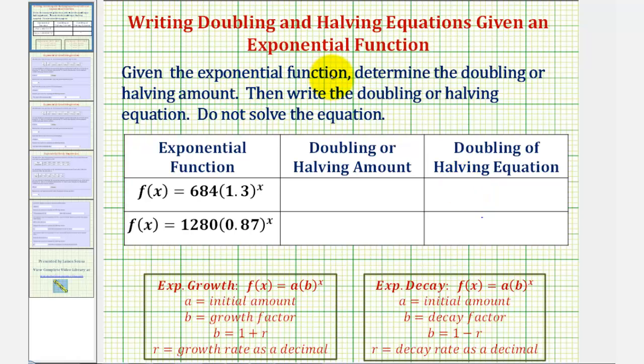We can determine if we have exponential growth or exponential decay by looking at the base of the exponential function. If the base is greater than one, as we see here, then we have an increasing function, and this would be exponential growth, where 1.3 would be our growth factor.